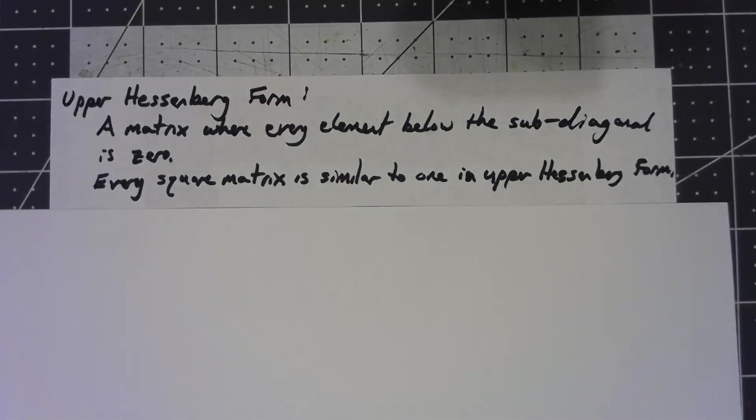The last modification we want to do to our QR algorithm is we want to sort of precondition it. We modify the problem to one that has the same answers but is easier to solve.